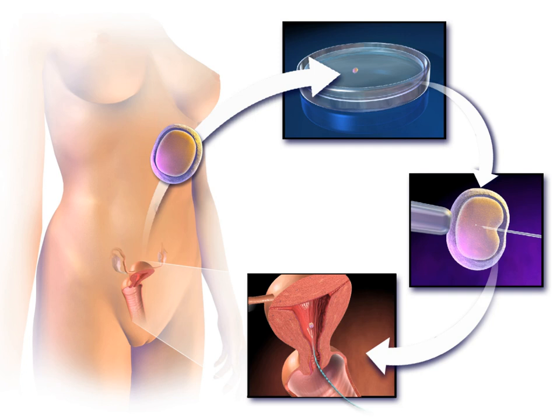PGD is an adjunct to ART procedures and requires in vitro fertilization to obtain oocytes or embryos for evaluation. Embryos are generally obtained through blastomere or blastocyst biopsy. The latter technique has proved to be less deleterious for the embryo, therefore it is advisable to perform the biopsy around day 5 or 6 of development.